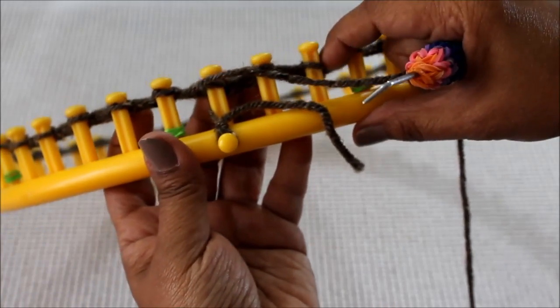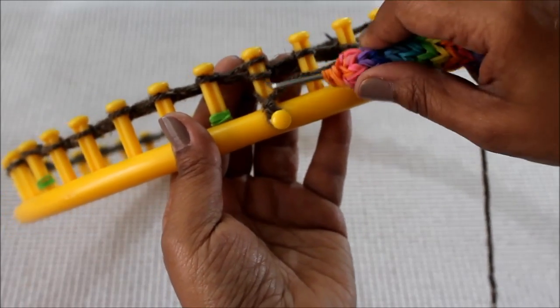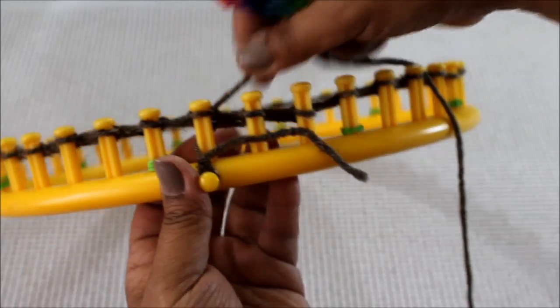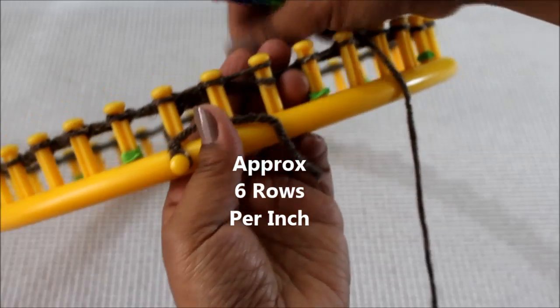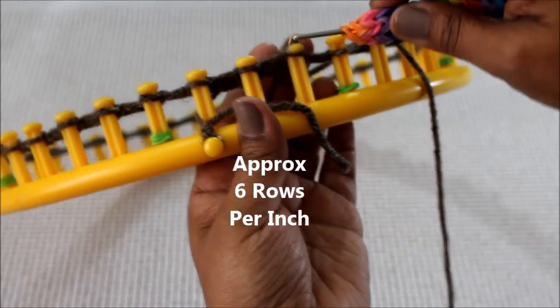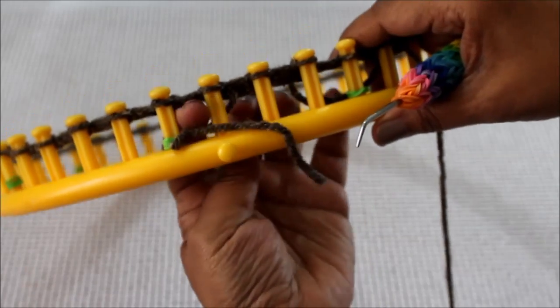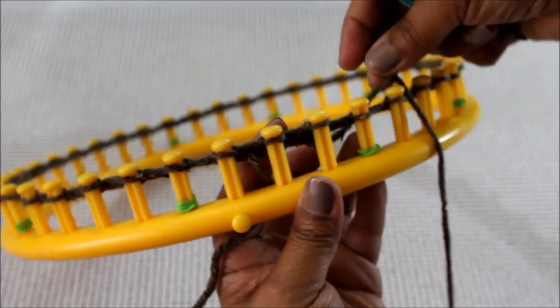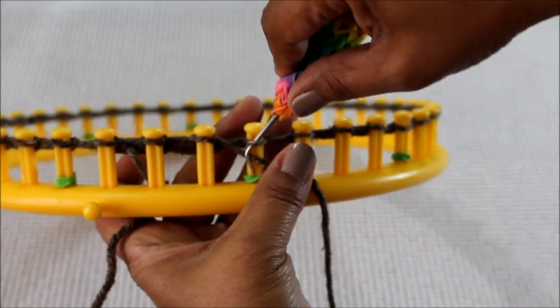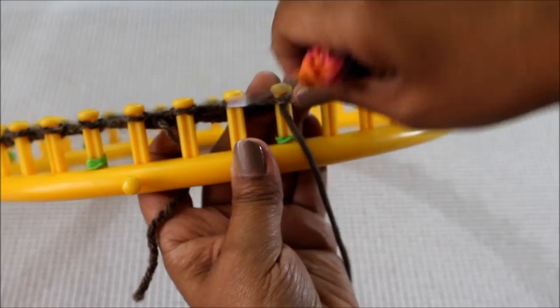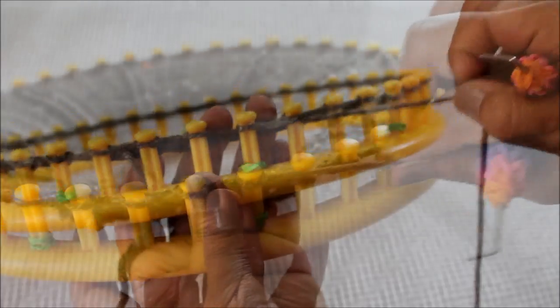So that was the end of row one and now we're ready to move on to the next row. And remember that it's going to be the same pattern for the number of rows that you need. And the formula is that for every inch of hat that you want, you need six rows of knitting. After this first or second row, just remove your slip knot off of the anchor peg. And then just keep knitting the same pattern. And I'll meet you somewhere around halfway.